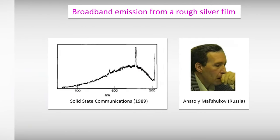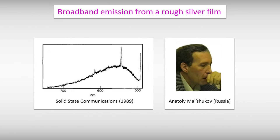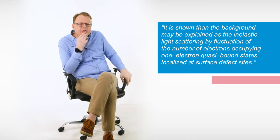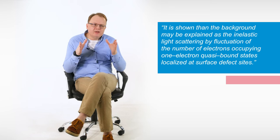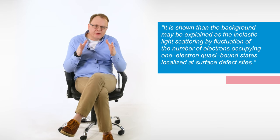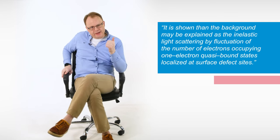Later, in 1989, Anatoly Malchukov succeeded to observe a similar phenomenon using metallic nanostructures, namely rough silver thin films, and developed a physical model to explain this effect. In the framework of his theory, the broadband emission originated from inelastic light scattering by fluctuation of density of single electron states near the surface defect sites in the vicinity of the Fermi level. This phenomenon has been long overlooked by the scientific community.